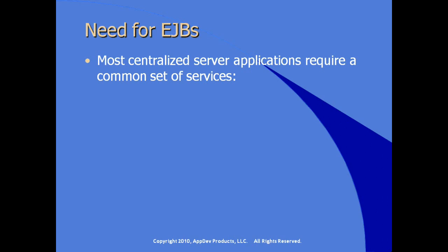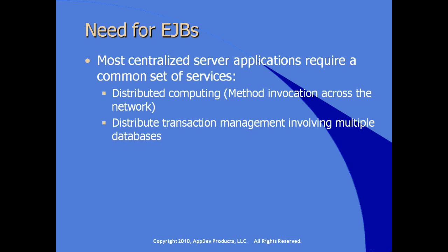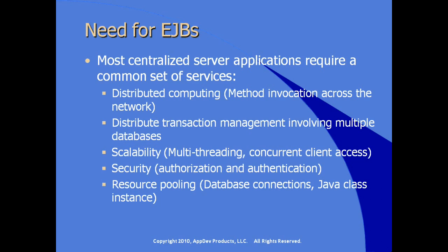Most centralized server applications require a common set of services, such as distributed computing for invoking methods across a network, distributed transaction management where you have multiple databases and need a transaction context, scalability to provide multi-threading concurrent client access, security for both authorization and authentication, resource pooling for database connections, Java class instances to help with performance, and persistence management — both activation and passivation. These are common services that most application servers require.